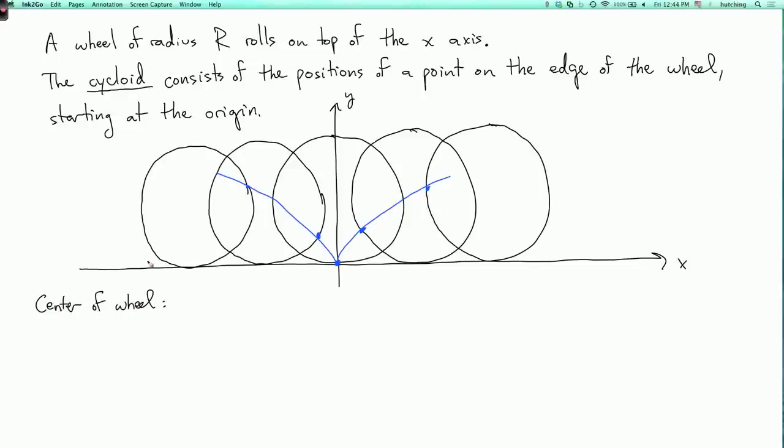So where's the center of the wheel at time t? Well, since the wheel has radius r, the y-coordinate of the center is always equal to r. And what about the x-coordinate? Well, the wheel is rotating at some speed. Let's say it's rotating to the right at speed r. It's kind of convenient to do it that way. And that tells us that t is the rotation of the wheel in radians from the starting point.